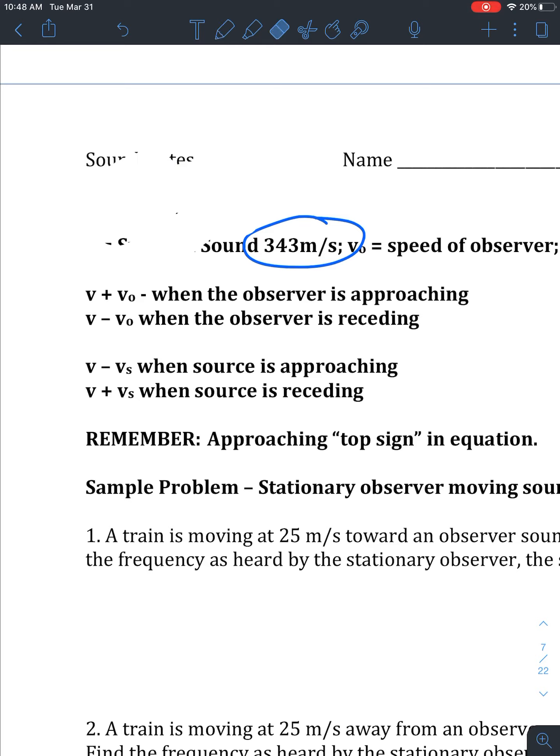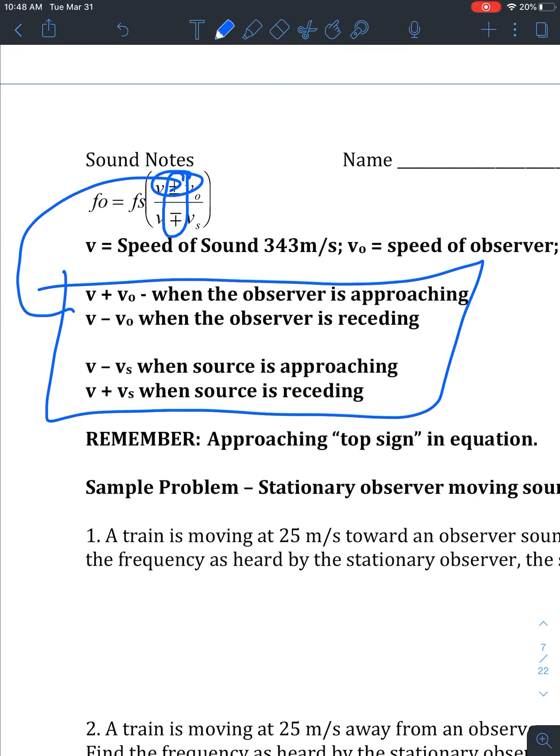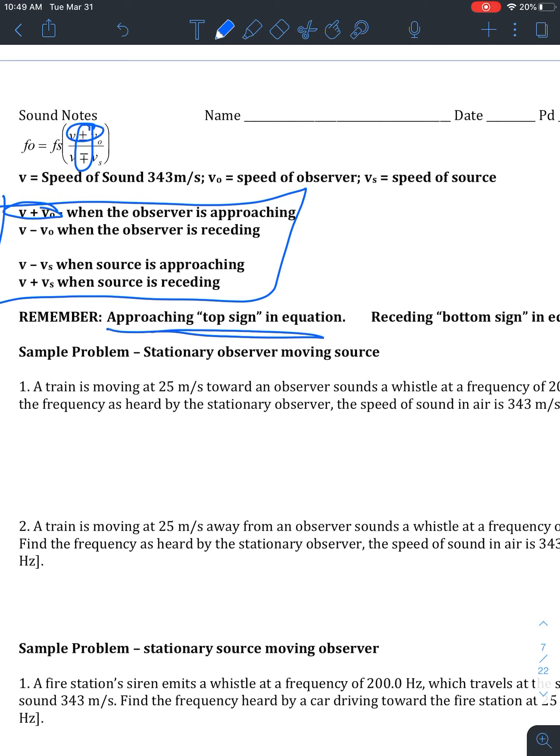And the most complicated part for people usually is this whole when to add and when to subtract deal. So we can go by these set of rules. Where for the top part, we'll use here. And then for the bottom part, we'll use down the bottom here. So we're going to add that top velocity when the observer is approaching, meaning getting closer to or moving towards. We would subtract when the observer is receding, receding meaning going away from, getting farther away. And then the opposite for the bottom. Approaching is in the top and then receding is in the bottom for both cases. But you notice that the signs switch from plus to minus to minus to plus.